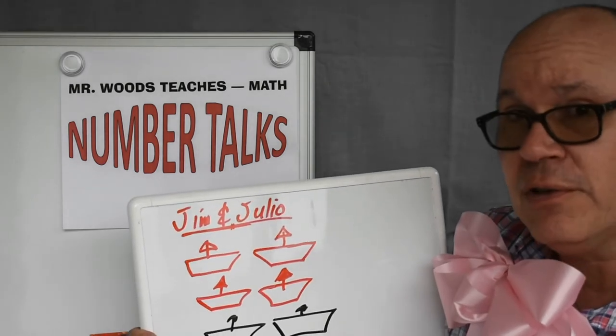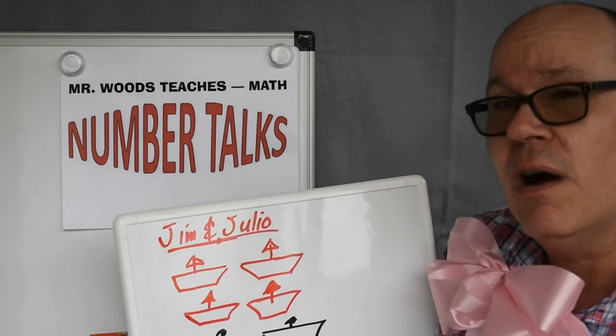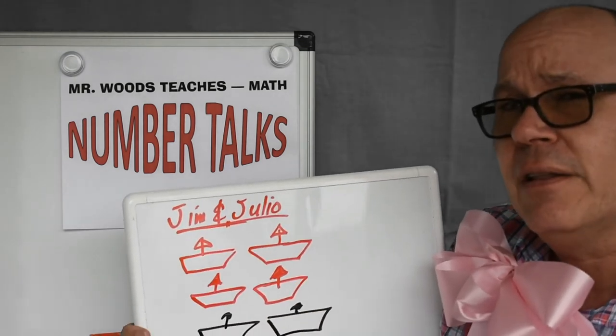These are columns. There's five in each column and two in each row. Hmm, let's take a look at that.